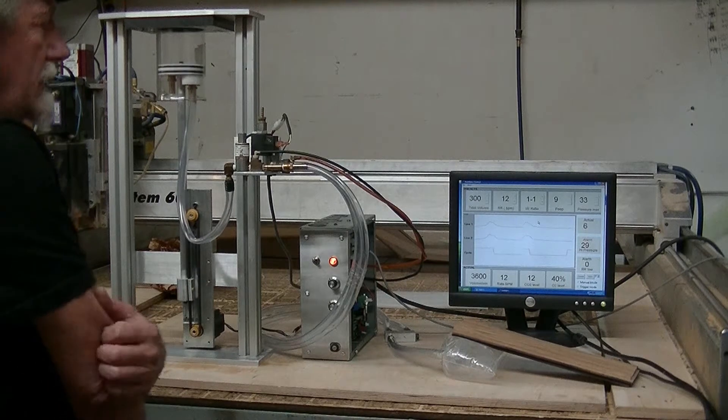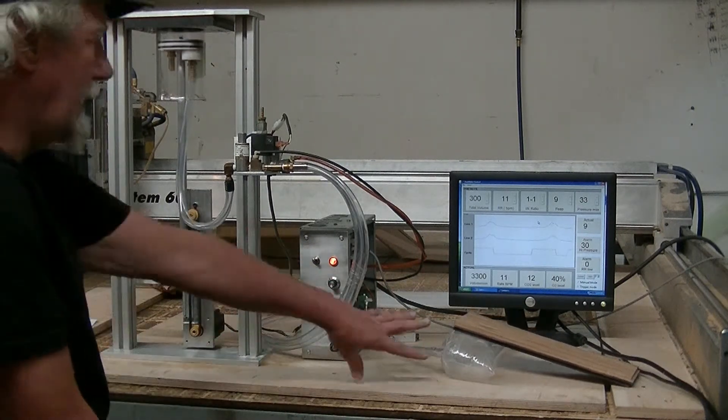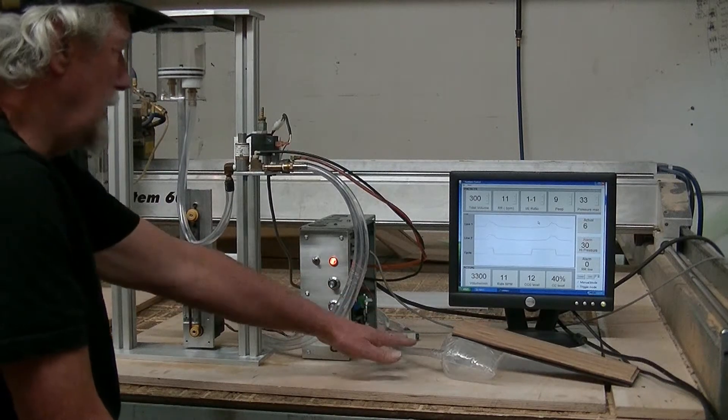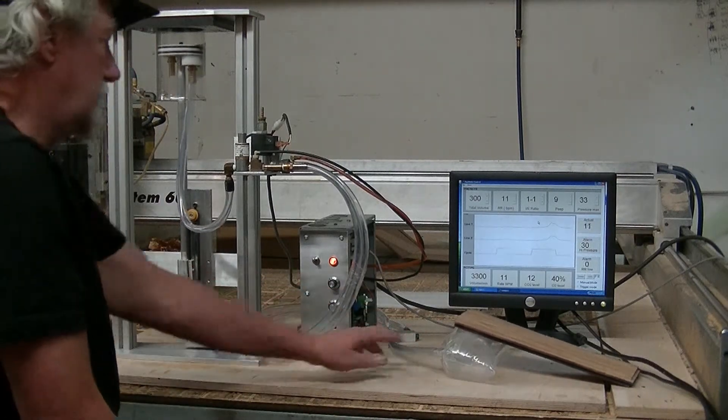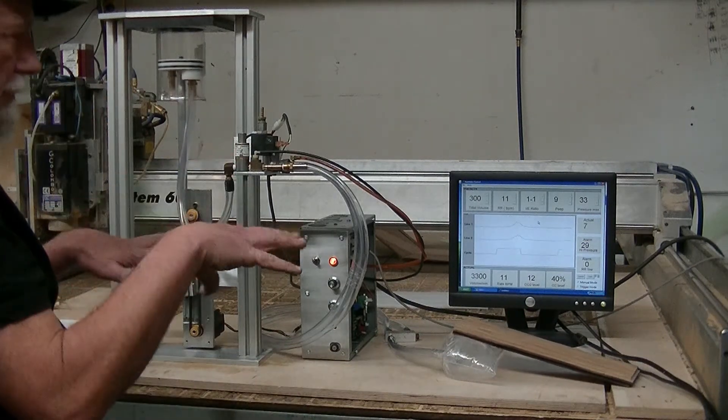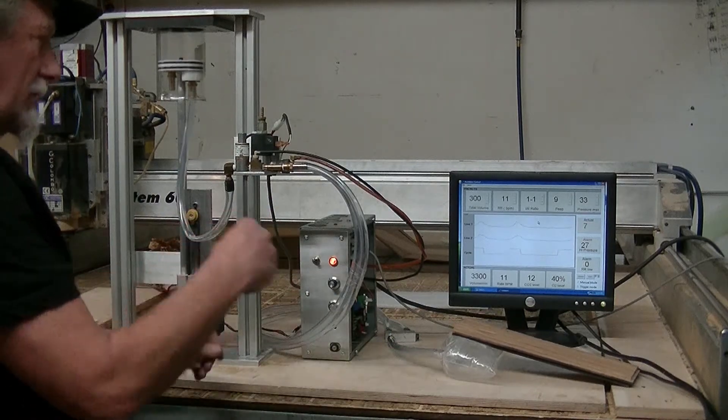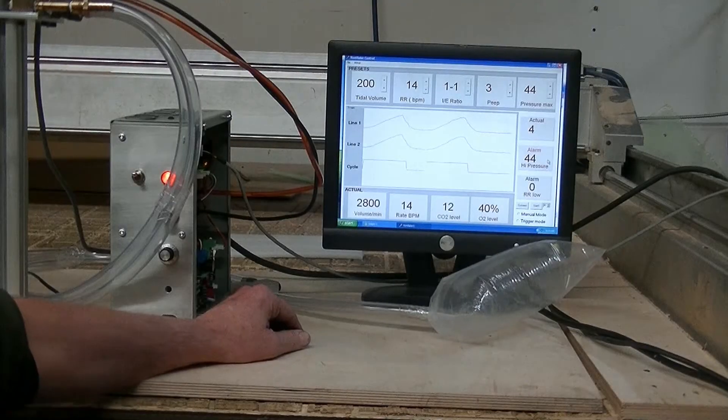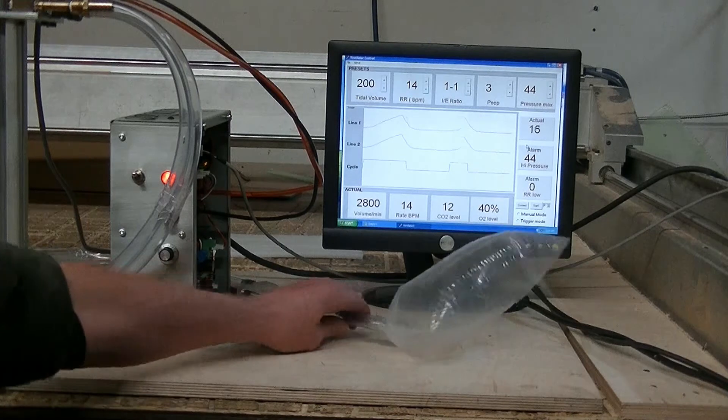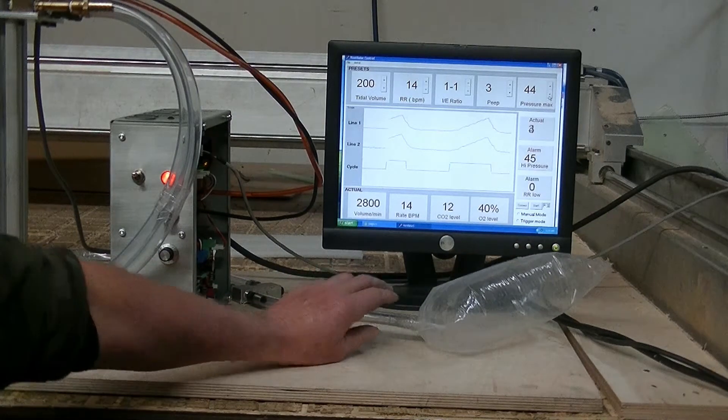It has some features in it like you can set the maximum pressure that is allowed in the person's lungs. And it trips, it holds that pressure. It doesn't exceed it. So there's a minimum pressure and a maximum pressure setting here.